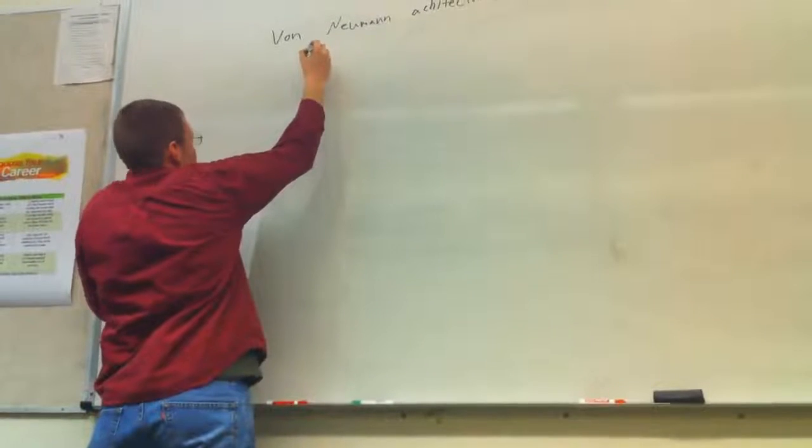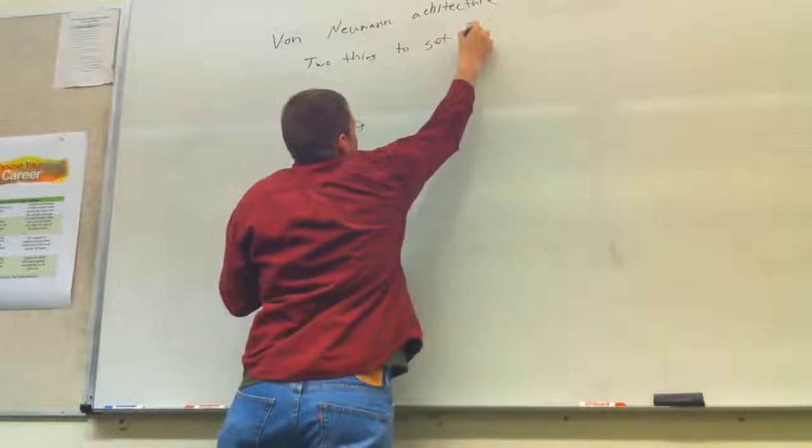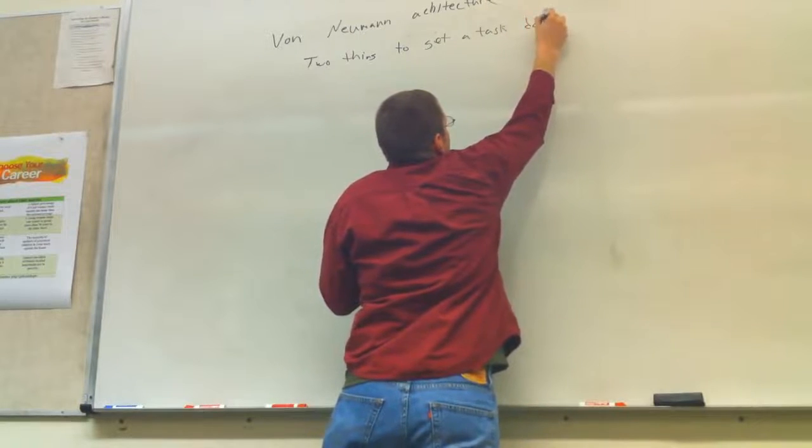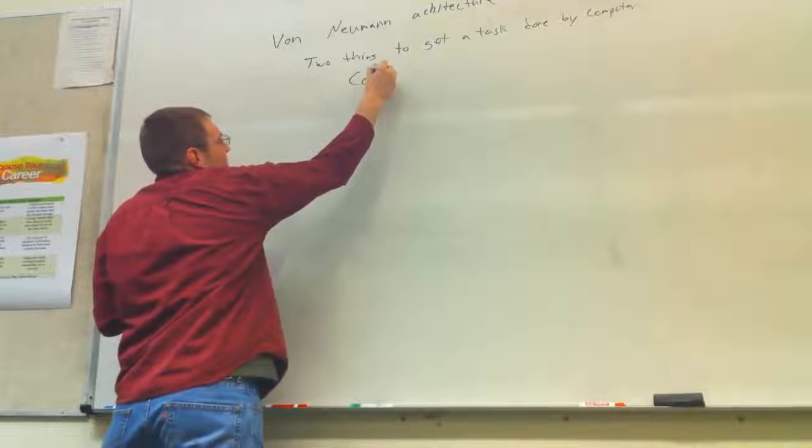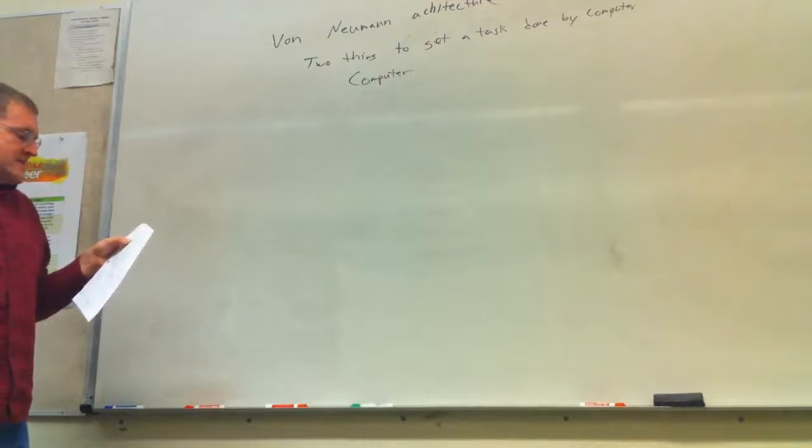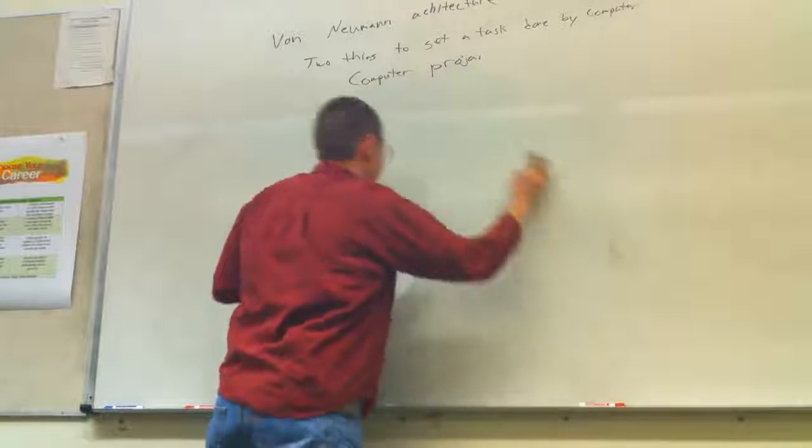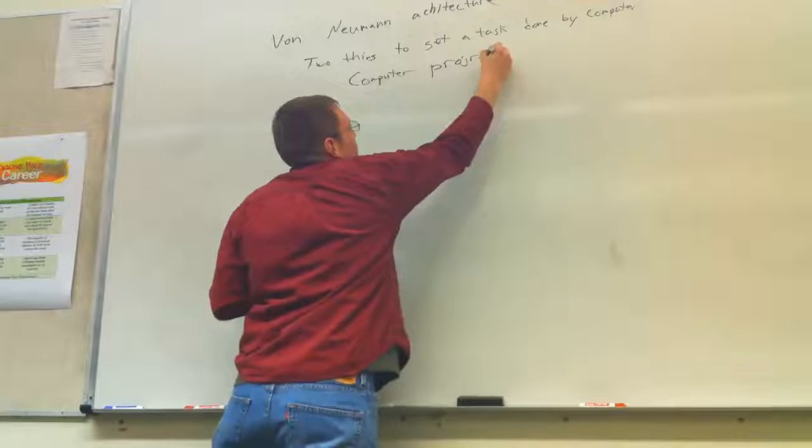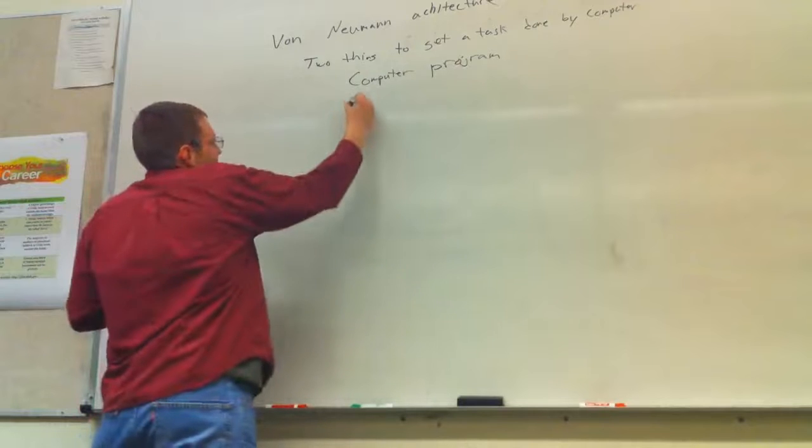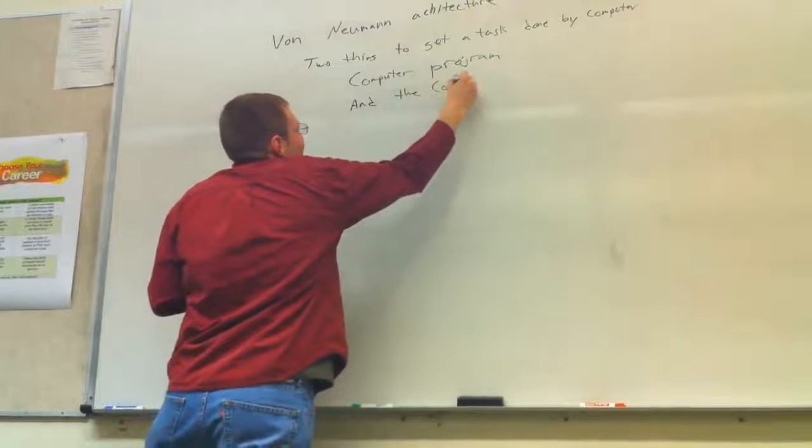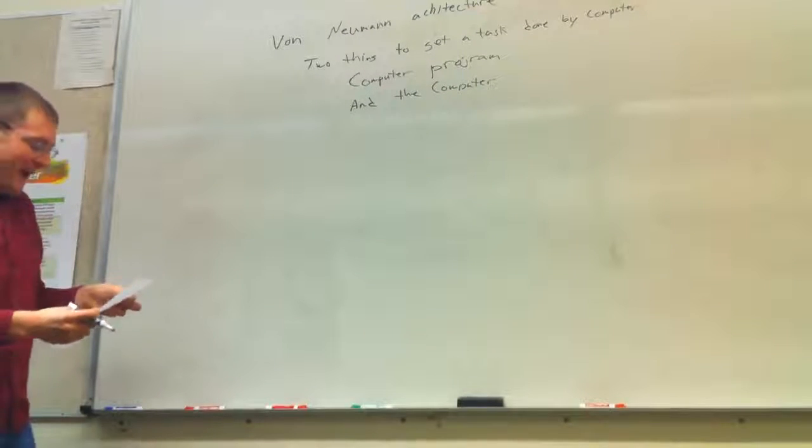And basically you want to have a definition of it. It's two things that it takes to get a task done. My computer, first the computer needs, what does the computer need to get a task done? Basically it needs a computer program, which is your ones and zeros. It needs ones and zeros to interpret, basically a given, some kind of language. And then it needs the computer. Basically it needs the computation, it needs to know how to compute. It needs to know how to solve mathematics, math, those kind of things.